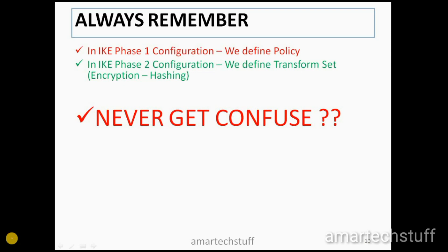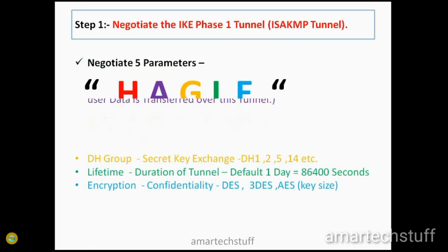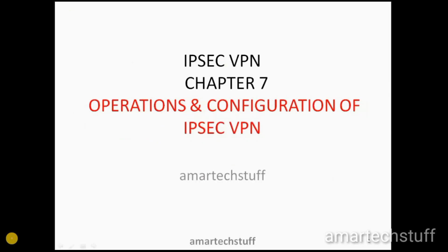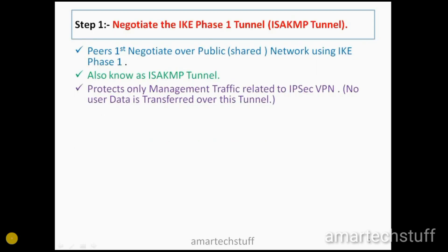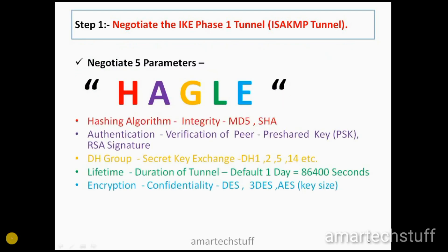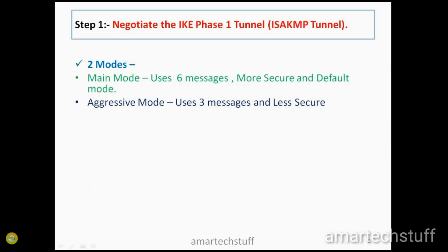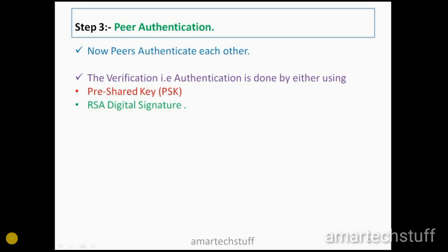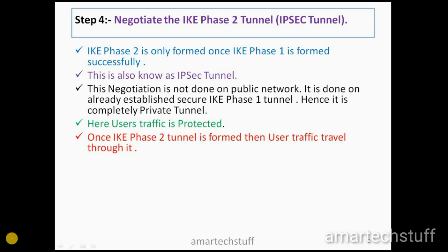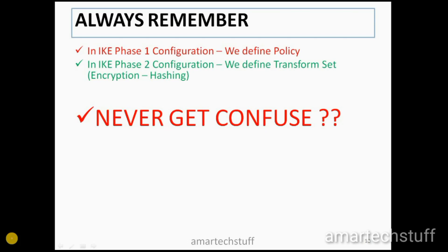Hi guys, this is Amar and welcome to Amar Tech Stuff. This is the continuation of IPv6 VPN chapter number seven. In the last video we went through the operations of IPv6 VPN — all the steps including how the IKE phase 1 negotiation happens, the associated parameters, how it negotiates those five parameters, the two modes: main mode and aggressive mode, and a discussion regarding step 2 that is Diffie-Hellman key exchange, peer authentication, and how the phase 2 tunnel negotiates.